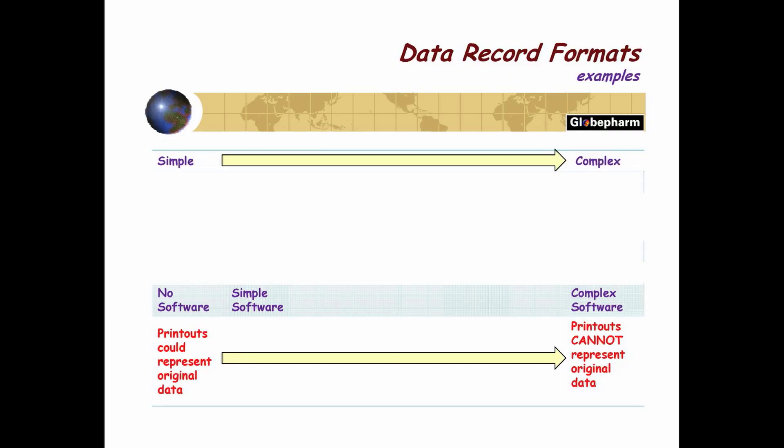There are different data record formats depending on the complexity of the activity — from simple to complex. Simple activities may not require software at all and a printout could represent the original data. For example, doing a weighing with a direct printout from the printer — no computer, no data saved in the balance, no linkage to a LIMS system. That's a simple system.